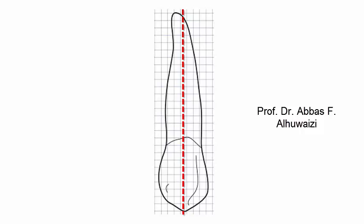As you can see, the tip of the root extends distally to the bisecting line.